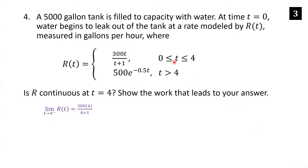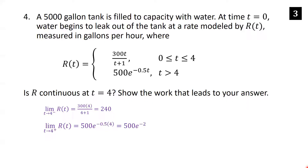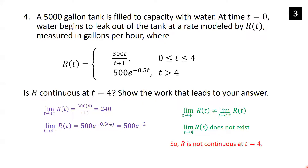The left-hand limit uses 300t/(t+1): plugging in t = 4 gives 300·4/(4+1) = 1200/5 = 240. The right-hand limit uses 500e^(−0.5t): plugging in t = 4 gives 500e^(−2). Since 500e^(−2) ≠ 240, the left and right limits disagree, so the limit as t→4 does not exist. Because the limit doesn't exist, r cannot be continuous at t = 4.